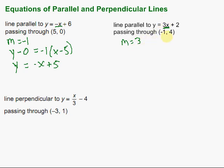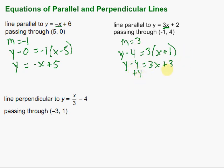Then we're going to use the slope and this point in point-slope form. So y minus y-sub-1: y minus 4 equals our slope 3, times x minus negative 1 — a minus a negative is plus — so x plus 1. If we want slope-intercept form, distribute that 3 through: y minus 4 equals 3x plus 3. Then add 4 to both sides, and we end up with y equals 3x plus 7. Notice those slopes are the same — the equations look very similar, the only difference is that y-intercept.